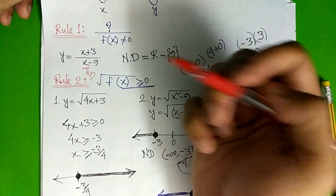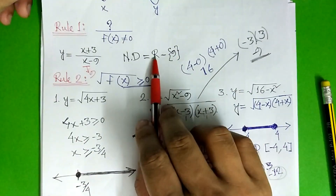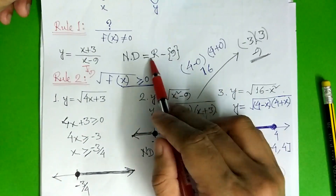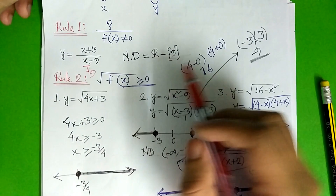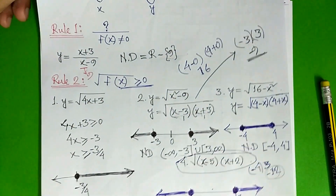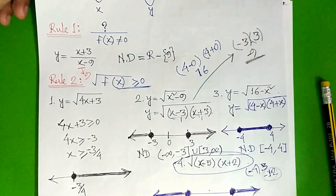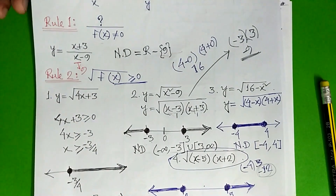So here is 0. There is 9 and it is a real number. So here is the main rule.